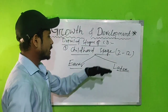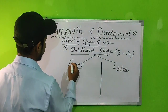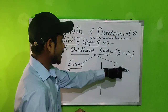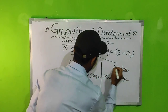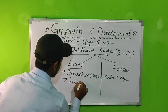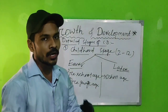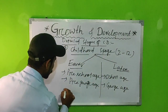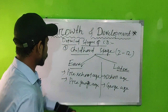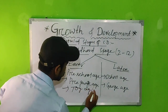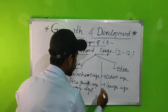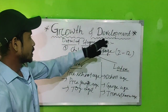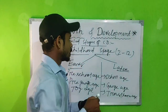Early childhood is called the pre-school age and also the pre-gang age and the toy age. Later childhood is called the school age and the gang age and the troublesome age. Childhood is also called a rapid stage.